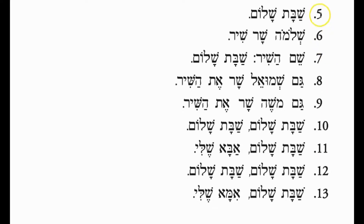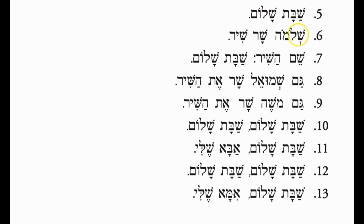A little song we're going to sing. Okay, number line 5: Shabbat Shalom — this is the title. Shabbat Shalom. Line 6: Shlomo Shar Shir — Shlomo being the Hebrew name Solomon; Shlomo and Solomon are the same name. Shar Shir.